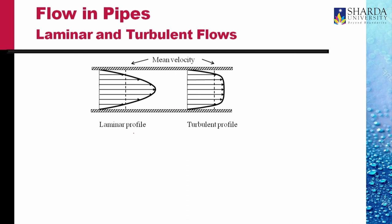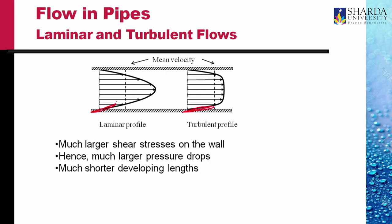Here we are comparing the flow profiles in laminar and turbulent flows. In laminar flows the maximum velocity is much larger than the average velocity. In turbulent flow the central region is quite flat. The gradient of velocity at the wall is much larger in turbulent flow than in laminar flow. Since shear stresses are related to velocity gradient, the shear stress on the wall in turbulent flow is much more than in laminar flow for the same mean velocity. Much larger shear stress on the wall results in much larger pressure drops, and much shorter developing lengths in turbulent flows.